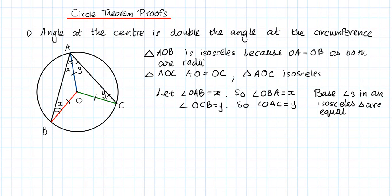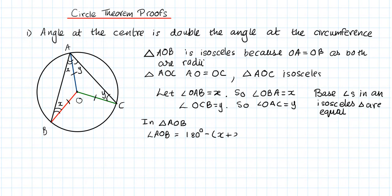Now in triangle AOB, we're going to find angle AOB. Angle AOB equals 180 degrees minus x plus x, which gives 180 minus 2x. The reason for this is that angles in a triangle add up to 180 degrees.